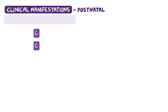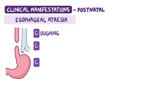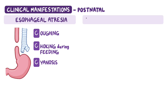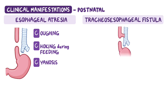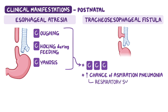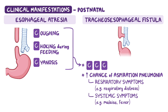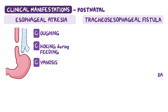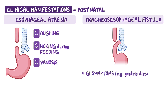Keep in mind the three C's for esophageal atresia — coughing, choking during feeding, and cyanosis. With tracheoesophageal fistula, when the proximal esophagus is connected to the trachea, the above symptoms remain, but there is a higher chance of developing aspiration pneumonia when content from the esophagus reaches the lungs. This is associated with respiratory symptoms like respiratory distress, along with systemic symptoms like malaise and fever. When the distal esophagus is connected to the trachea, GI symptoms like gastric distension appear due to the fact that air reaches the stomach through the fistula.